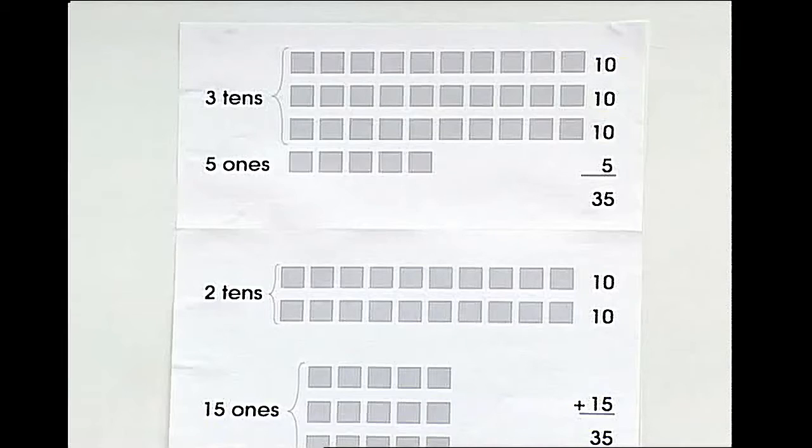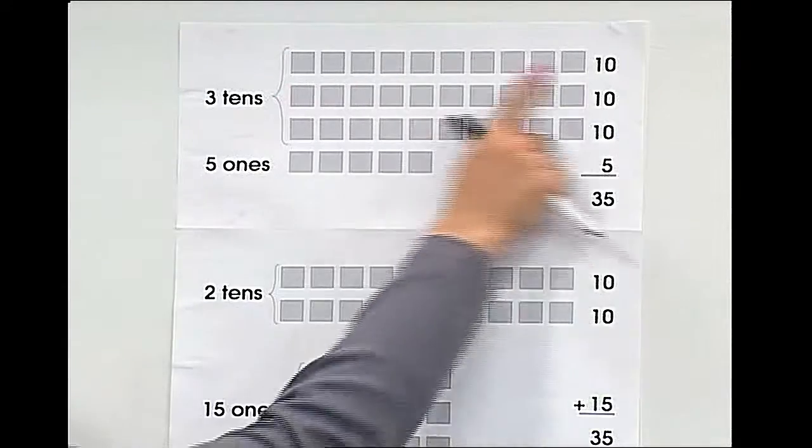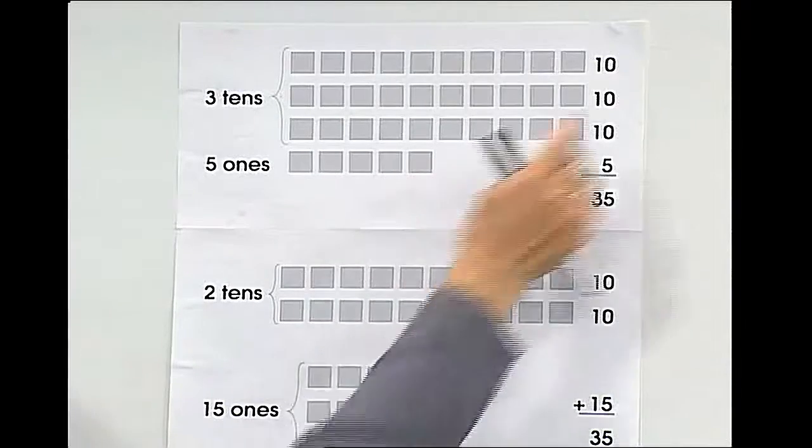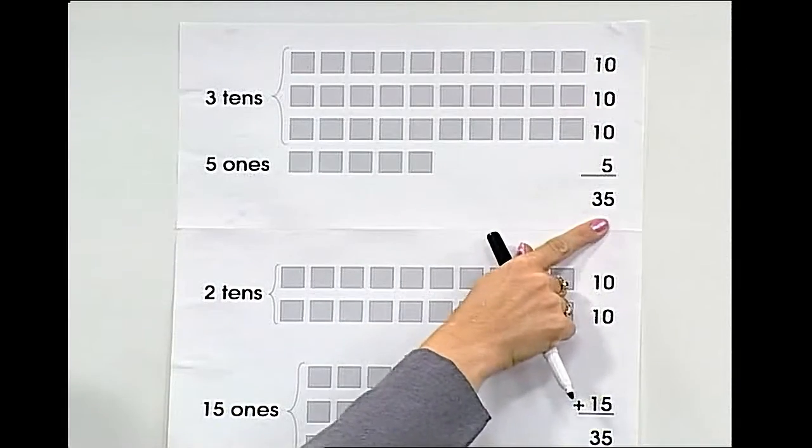The number 35 is made up of three tens and five ones. As you can see in this diagram, we have three groups of ten and one group of five. Three tens, one five gives me 35.